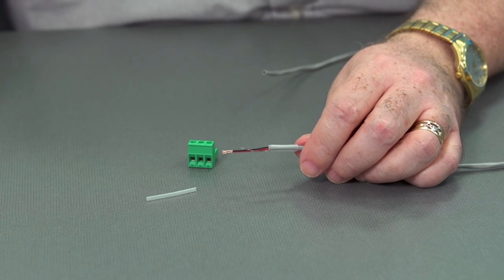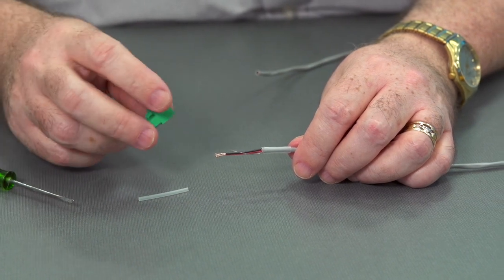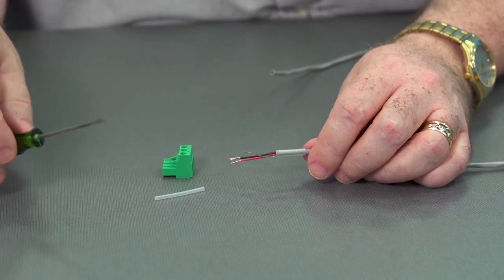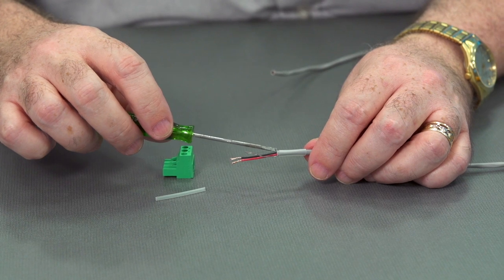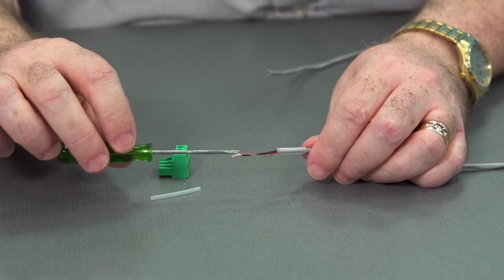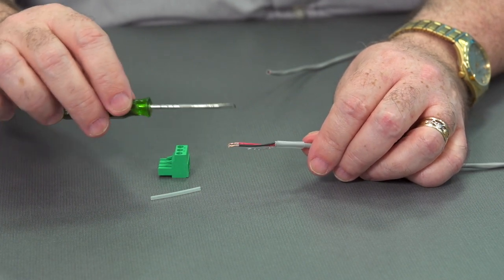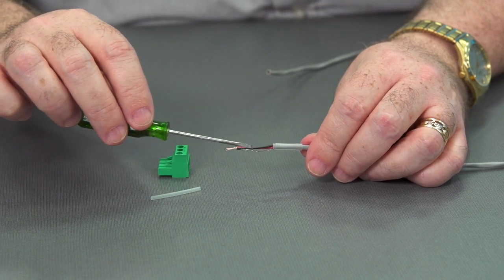So the first step in building our captive screw connector is to trim back our outer jacket. We've done that. As you can see we've stripped back a little bit on each one of the individual wires and we have a shield wire here that is bare.